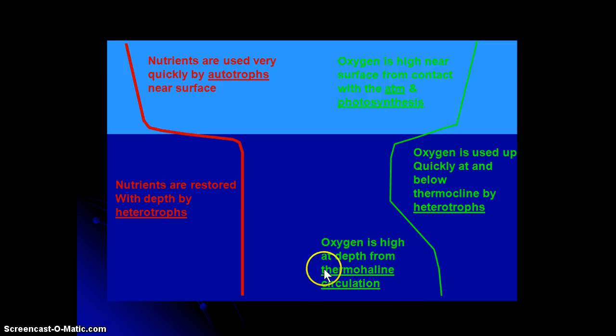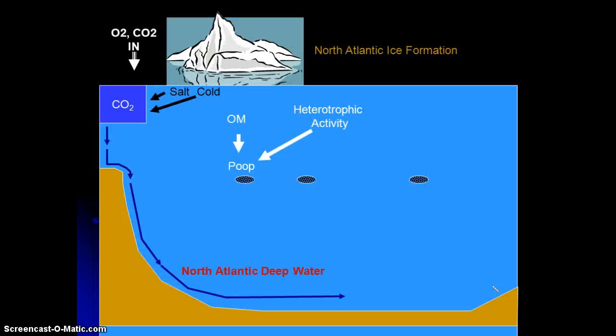Okay, so thermohaline circulation actually brings the oxygen back. So what we get essentially, if you look at it in a picture, is we get deep water formation. As the water travels along the ocean, organisms essentially, we get all the activity in the surface and throughout the water column that we talked about in the previous weeks.